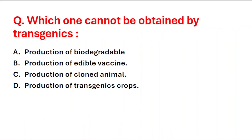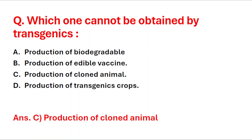Next question: which one cannot be obtained by transgenics? A: production of biodegradable plastics, B: production of edible vaccines, C: production of cloned animals, D: production of transgenic crops. The right answer is option C, production of cloned animals.